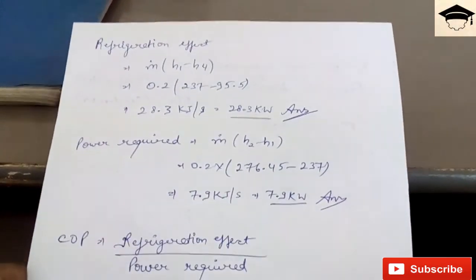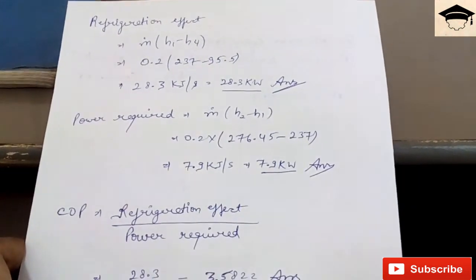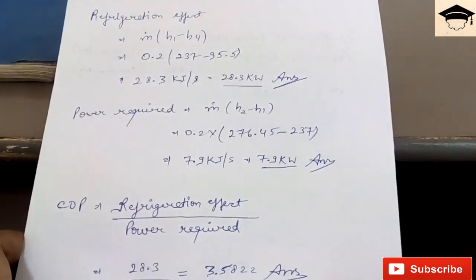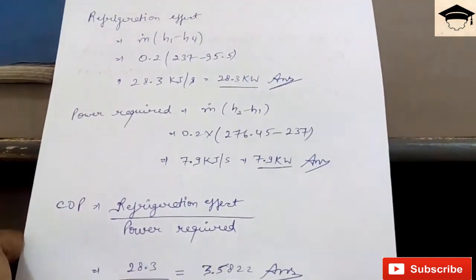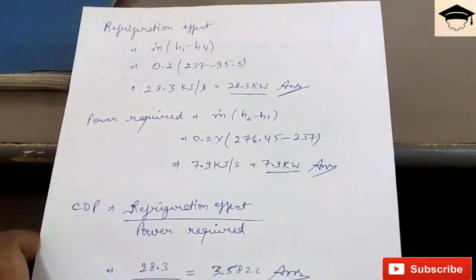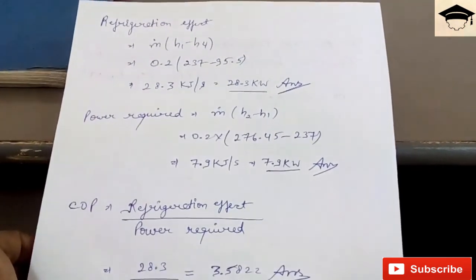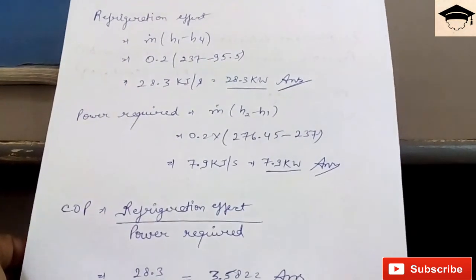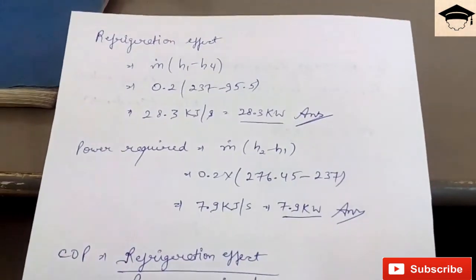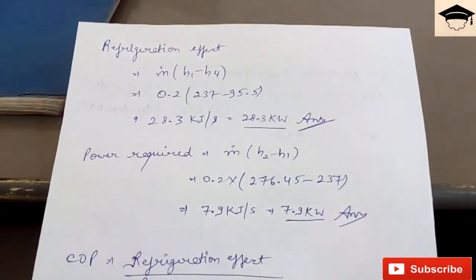Now power required will be mass flow rate into (h2 minus h1). You know the corresponding values from the chart, you substitute and get 7.9 kilojoules per second or 7.9 kilowatts. COP, coefficient of performance of the refrigerating system, is given by the ratio of refrigeration effect to the power required in the compressor. So 28.3 divided by 7.9 kilowatts gives COP equal to 3.5822.